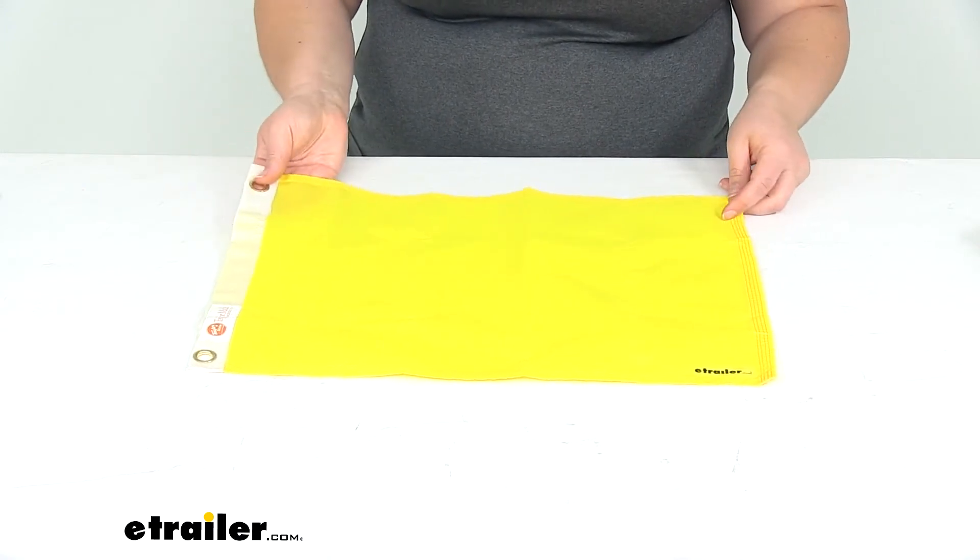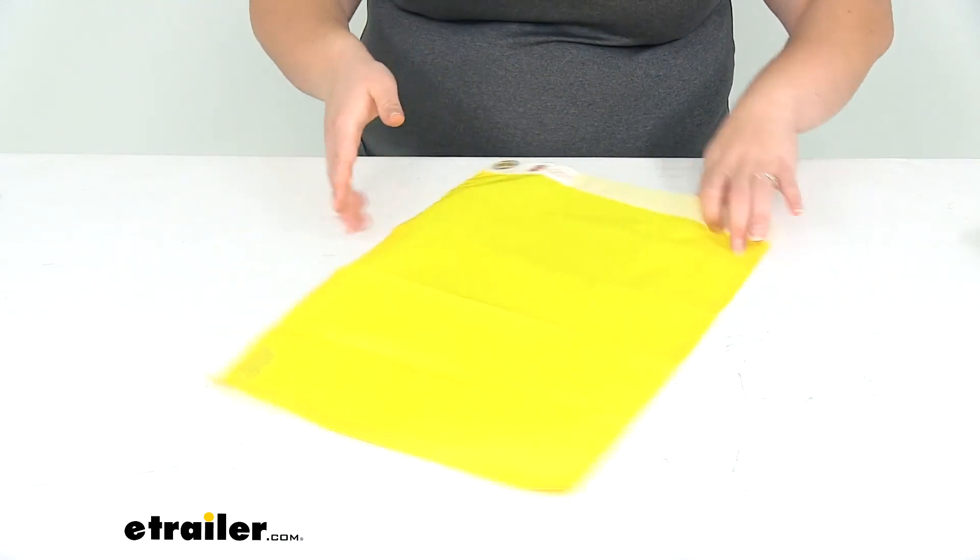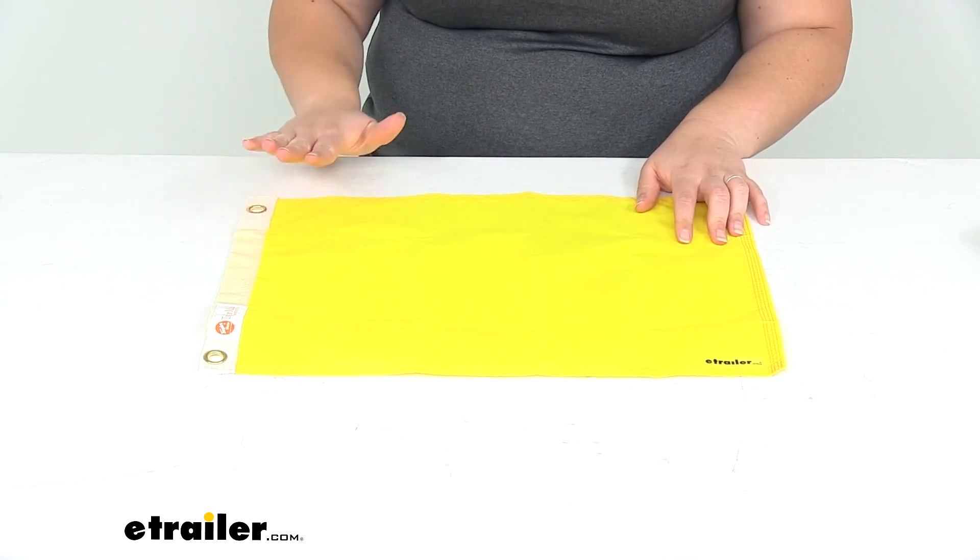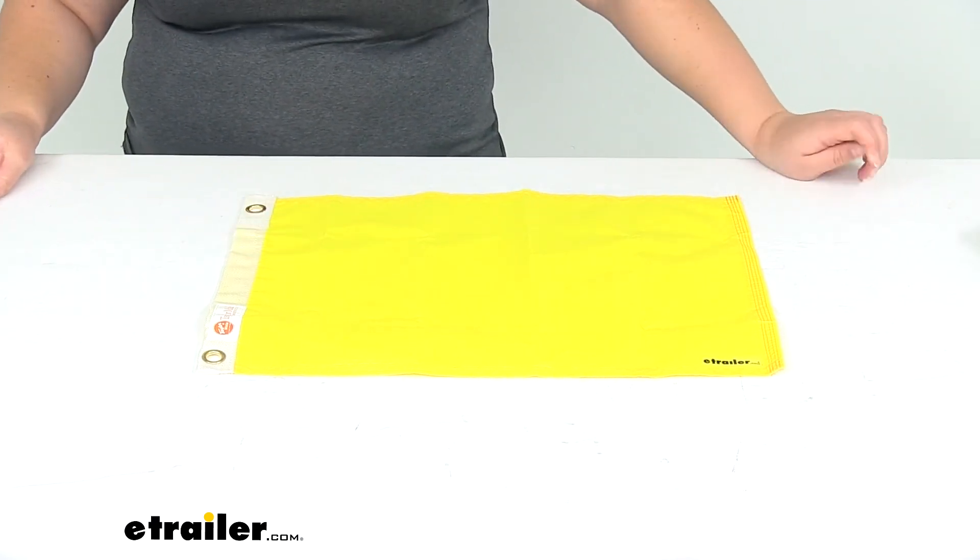So this is going to be that standard yellow quarantine boat flag. If you need any other accessories to go with this, like a pole to fly it from your boat, you can always find those right here at eTrailer.com, sold separately. And that's going to do it for our look at the tailor-made nylon boat flag.